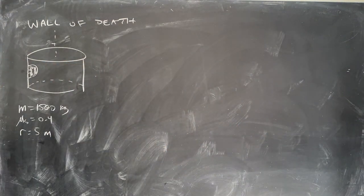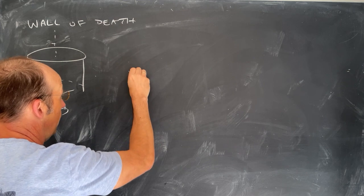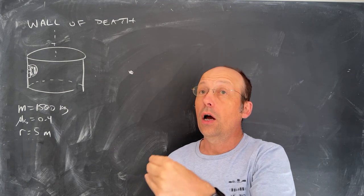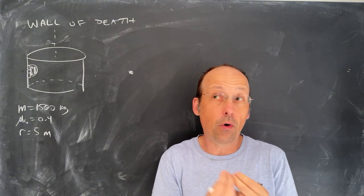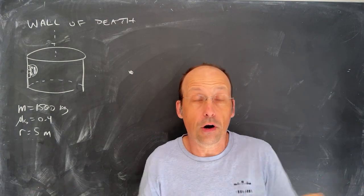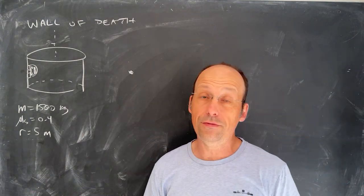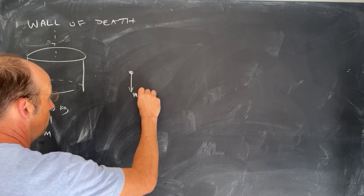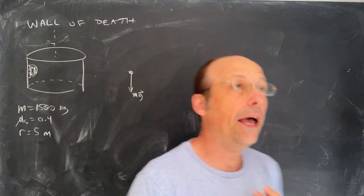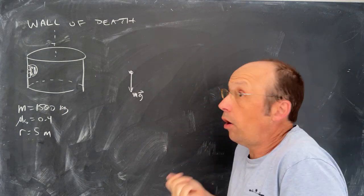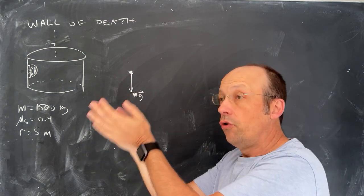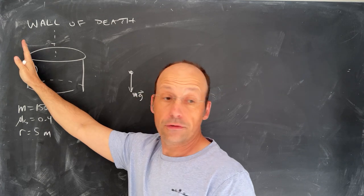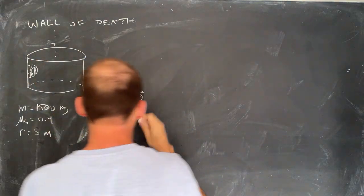Let's draw a force diagram for the car. I'm going to put my dot right there. What forces are acting on the car? We can use the same approach as before. What long-range forces are acting? The only one we've seen so far is gravity, so we have the gravitational force pulling down: mg. What else touches the car? The wall touches the car, and walls exert normal forces perpendicular to the surface. In this case the surface is vertical, so the normal force pushes horizontally inward.